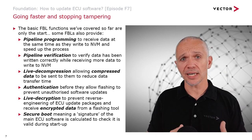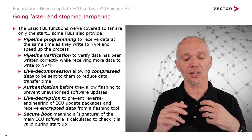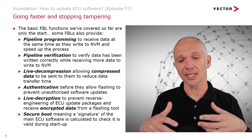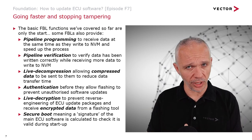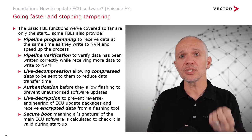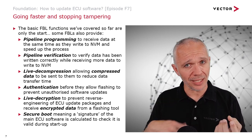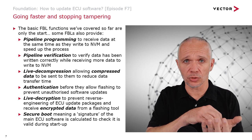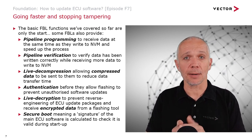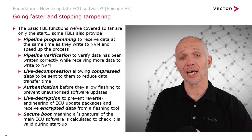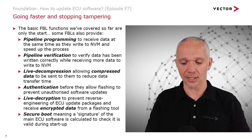We may also want to have authentication, so we have to authenticate ourselves in some way to prevent an unauthorized software update. And finally, we may even want secure boot. What this means is that we calculate a signature of the main ECU software, which is stored in a secure location inside the ECU. Every time the ECU restarts, the flash bootloader will recalculate that signature and compare it with the stored value to check if the software has been tampered with. If it has, it will stop the ECU from operating.